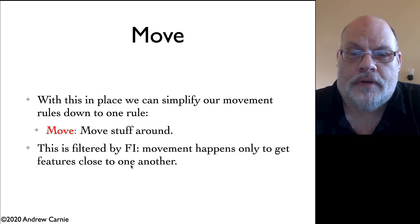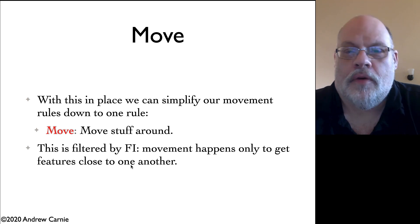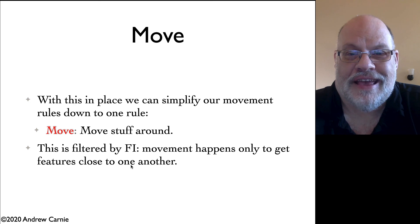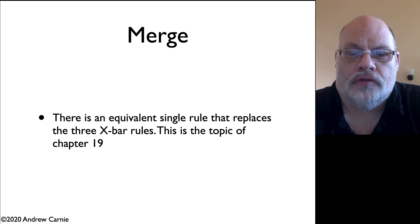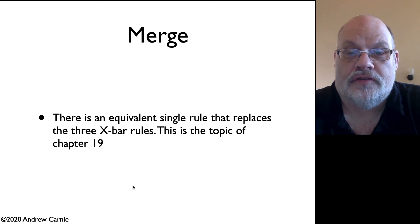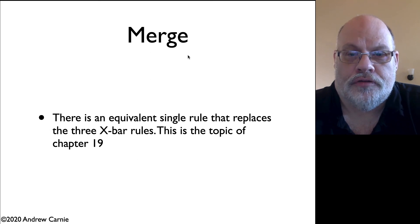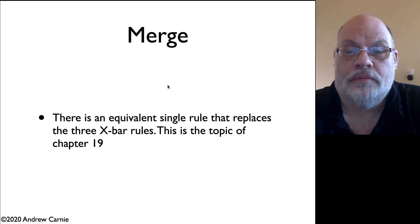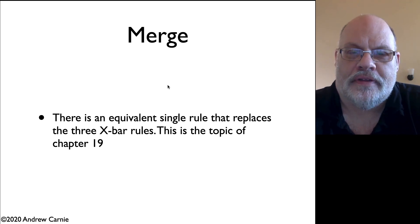It's also the case that we might want to collapse our three X-bar rules, because they do similar things as well. There is a proposal to do this called Merge. But for reasons having to do with the complexity of the representations that Merge creates, I'm going to leave discussion of Merge until Unit 19, the very last chapter of the book. You can look ahead if you want. Essentially, Merge reduces those X-bar rules to a much simpler set, but the representations look very different from what we're used to.